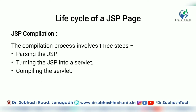Now let us see the different phases. First is JSP compilation. The compilation process involves three steps: first is parsing the JSP, second is turning the JSP into a servlet, and third is compiling the servlet. In compilation, first the JSP is parsed — meaning it is read and arranged according to grammar. Then the JSP page is converted into a servlet, and then this servlet is compiled for execution.